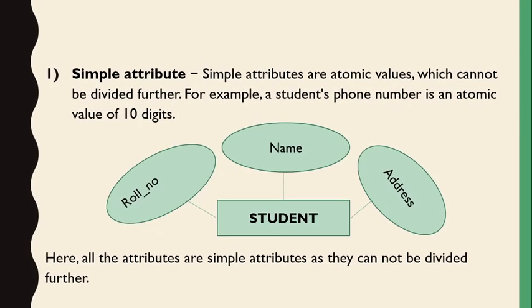First, we discuss simple attributes. Simple attributes are atomic values which cannot be divided further. For example, a phone number is an atomic value of 10 digits that cannot be divided. Roll number is also a simple attribute — it cannot be divided. However, name and address can be divided: name is formed by first name and last name, address is formed by area, pin code, and so on. Roll number, which is not divided further, is a simple attribute.